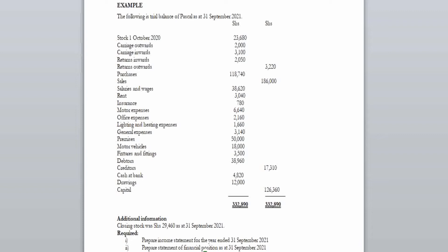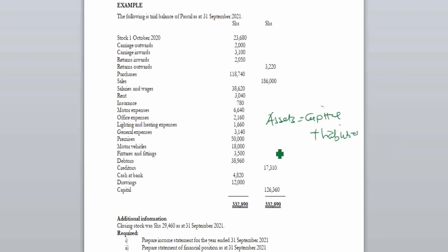From the trial balance — remember, the trial balance is a statement which assists in preparation of the final statements — we have all the figures here. We'll use these figures to prepare our statement of financial position using the equation we know: assets equals capital plus liabilities.